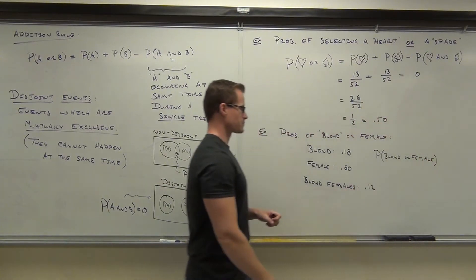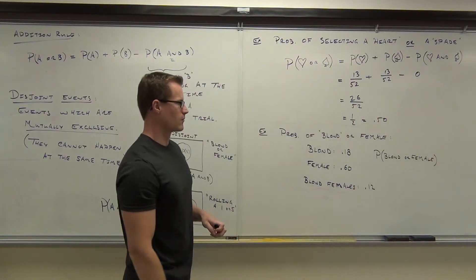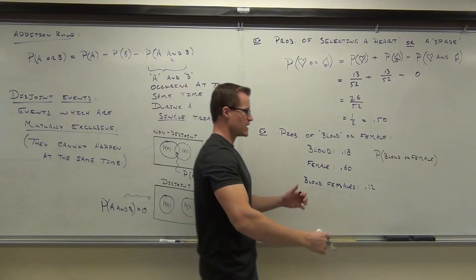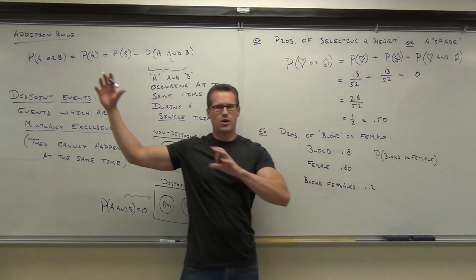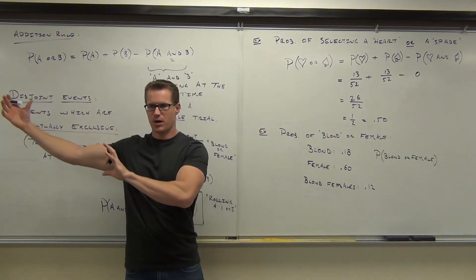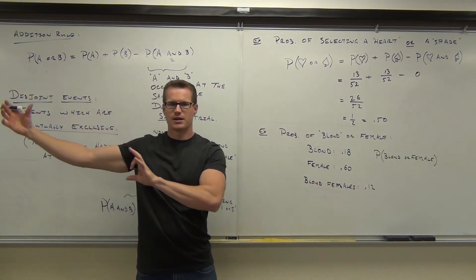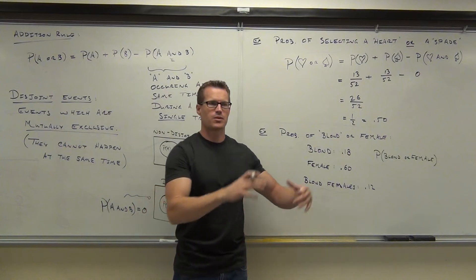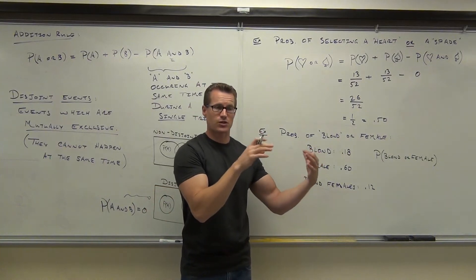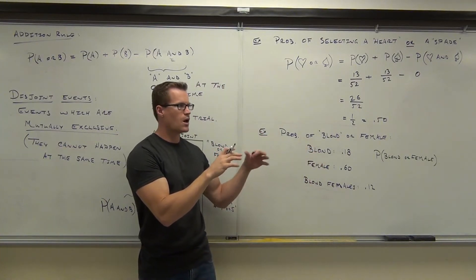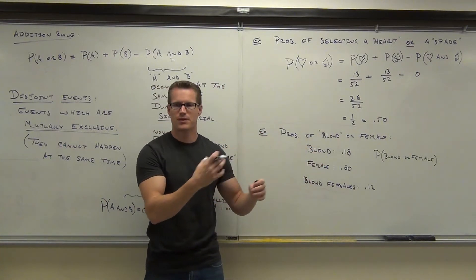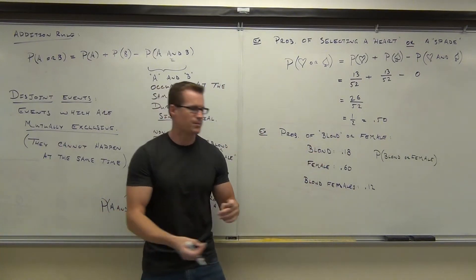...of blonde or female. What this says is that we're going to have, by the addition rule, the probability of being blonde — that's our first event — plus the probability of being female — that's our second event — minus the probability that they could occur together.